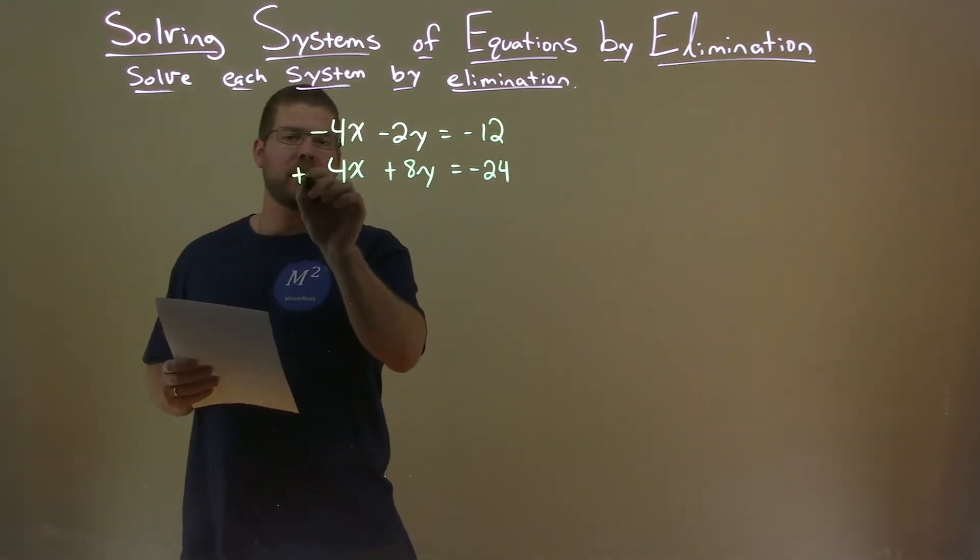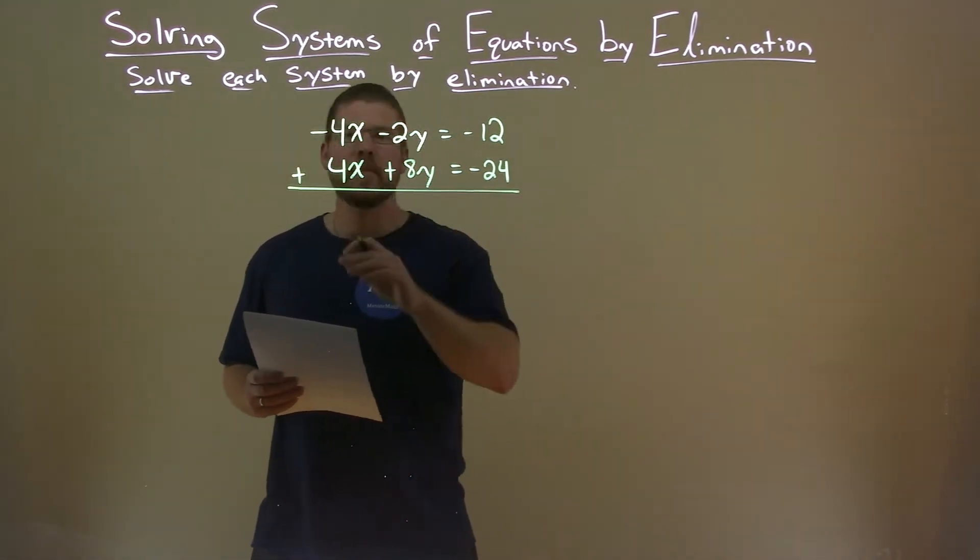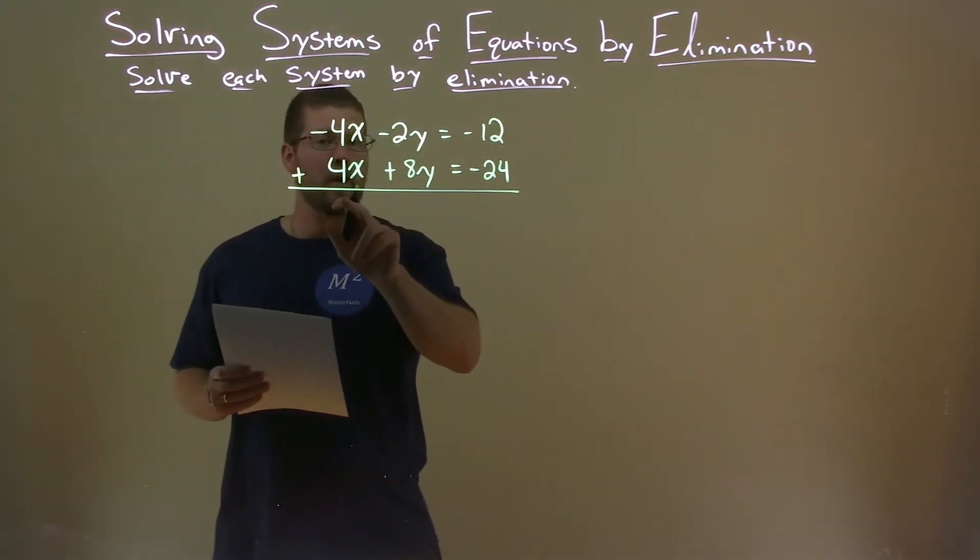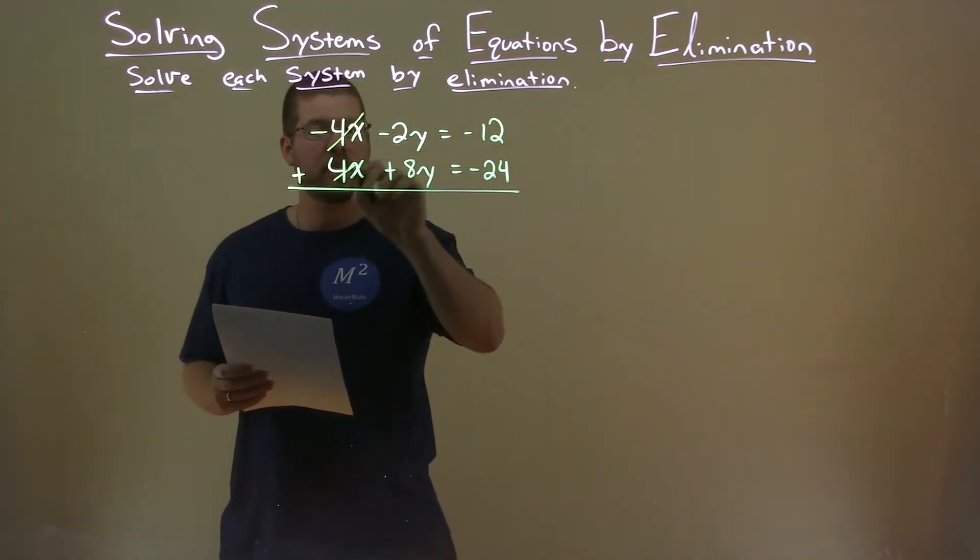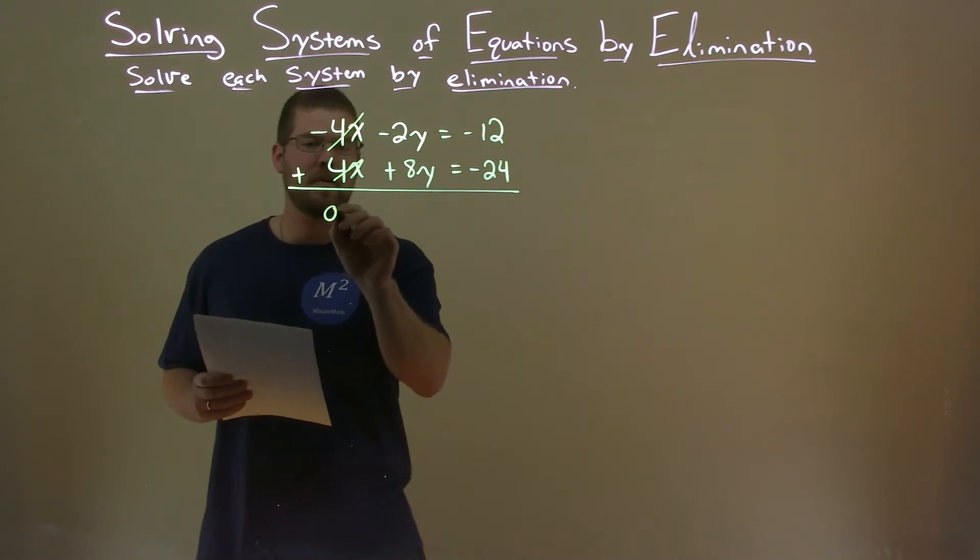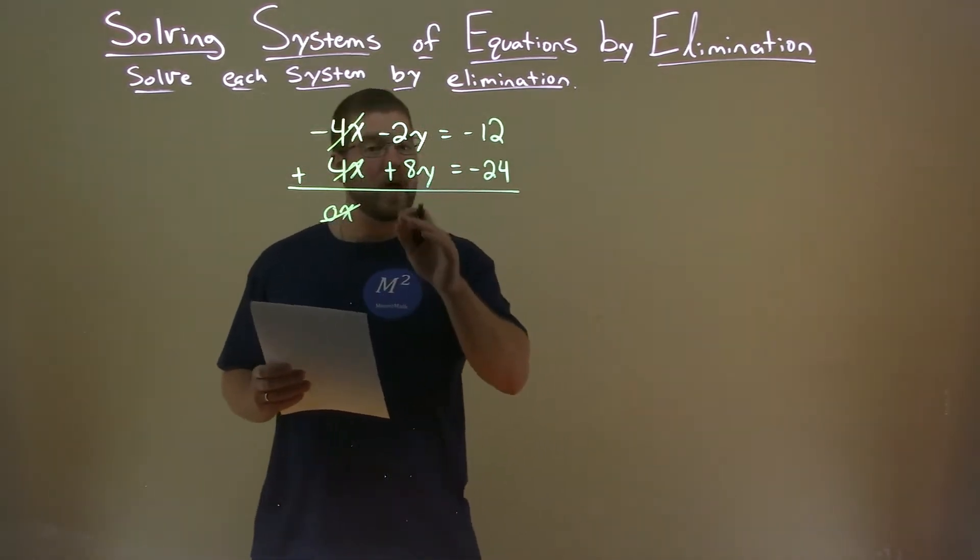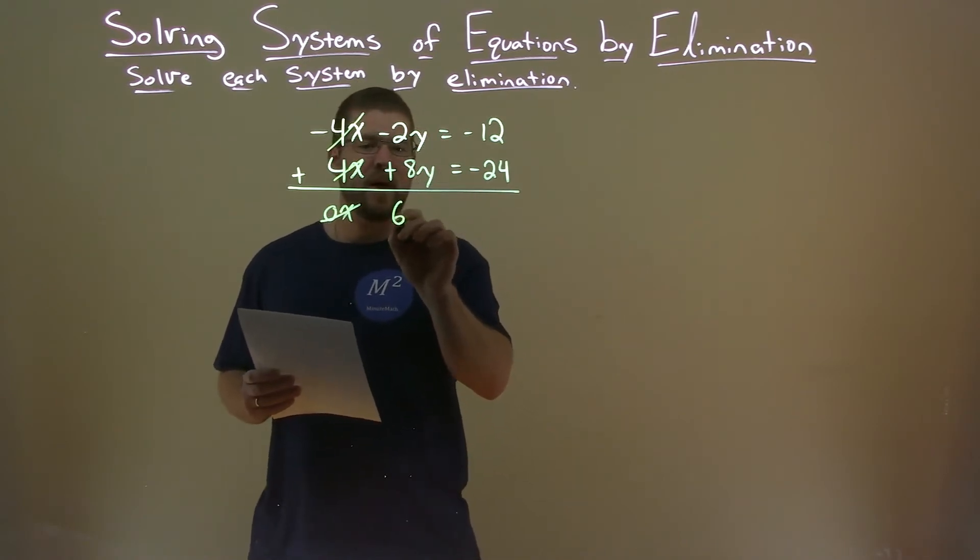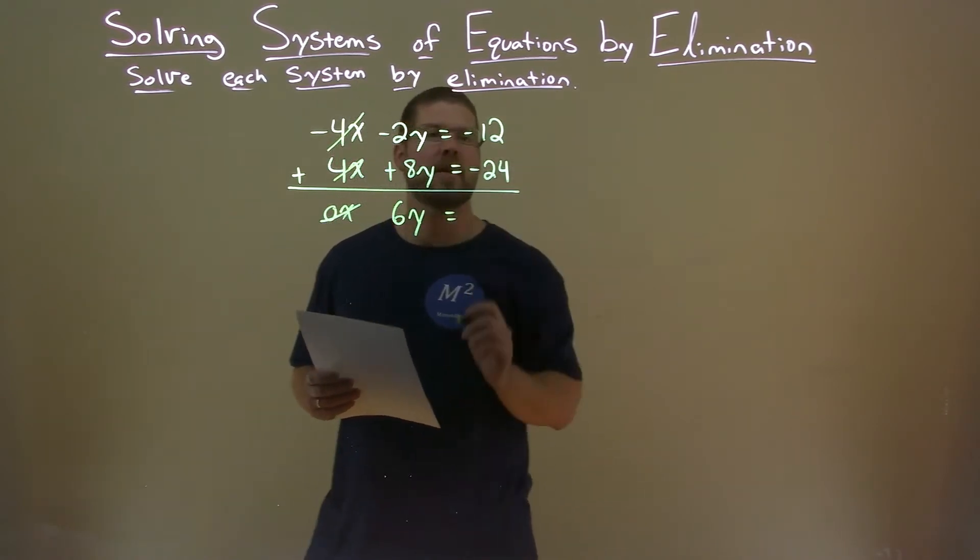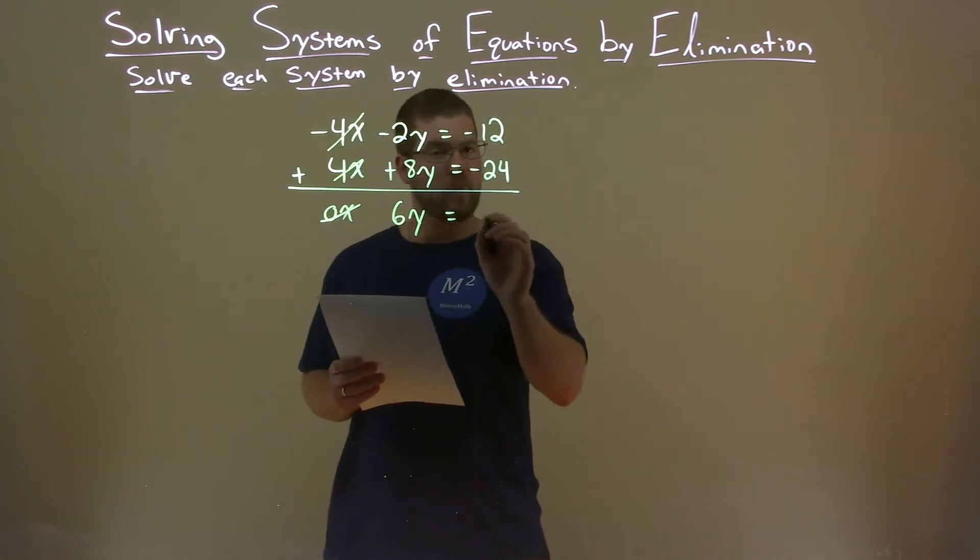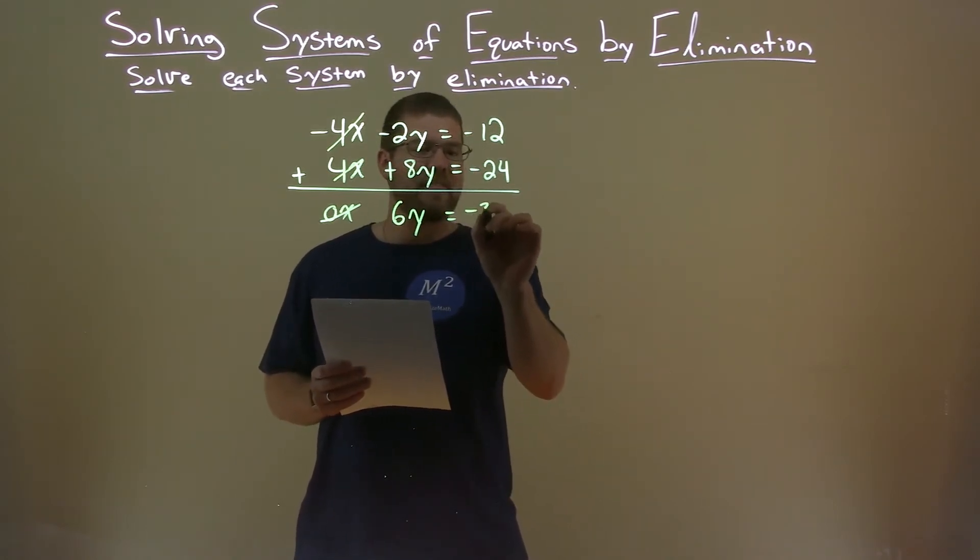So by doing that here, I can add down. We have minus 4x plus 4x, that eliminates the x's, giving us 0x, which we don't really need to write. Negative 2y plus 8y is positive 6y. Negative 12 plus negative 24 is negative 36.